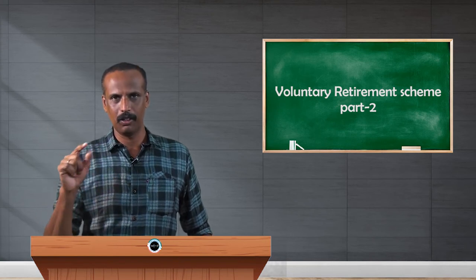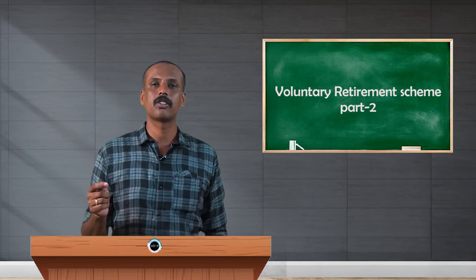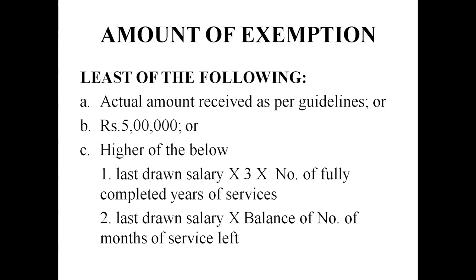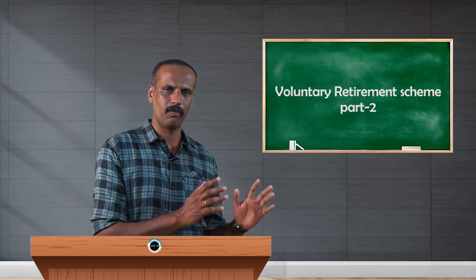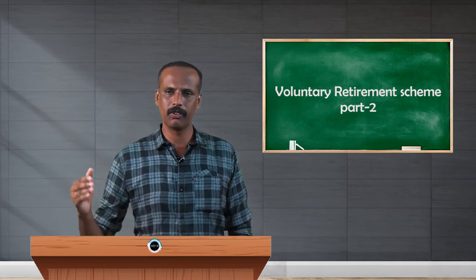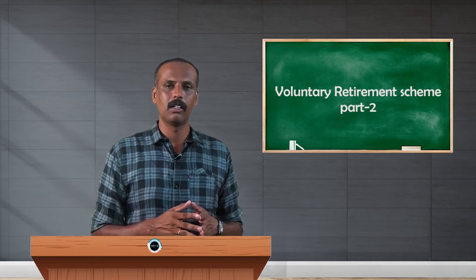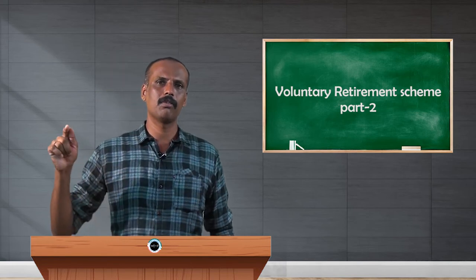The first sub-amount is: last drawn salary × 3 × number of completed years of service. The second sub-amount is: last drawn salary × balance number of months of service remaining. This is important — VRS is retirement before the scheduled retirement date. So however many months remain until retirement, that number is taken and multiplied by the last drawn salary.